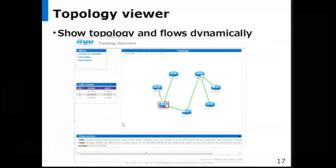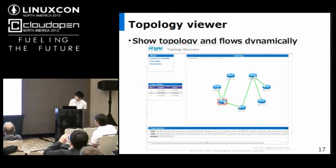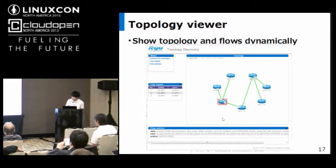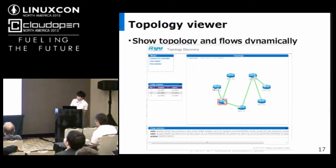This is a GUI tool to see the network topology with a web browser. It shows network topology and flow entries dynamically. This tool uses the OpenFlow REST API, so you can install flow entries into the switch and get information with the browser.